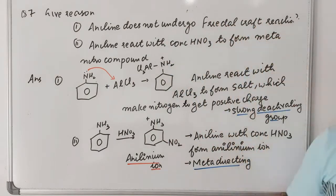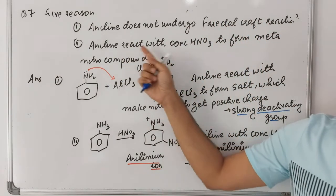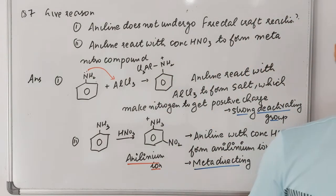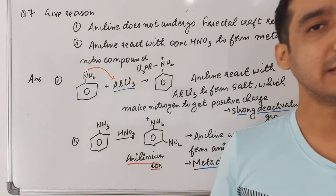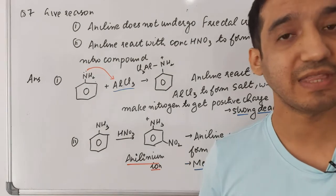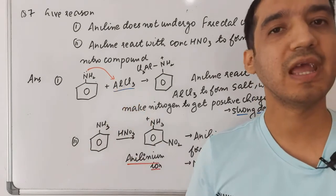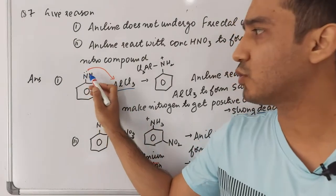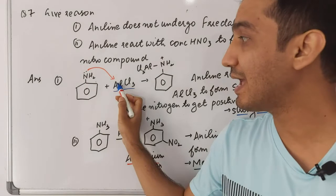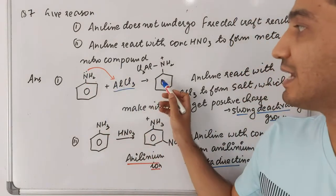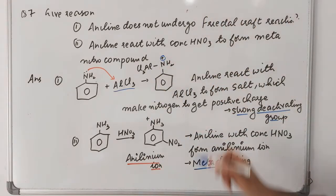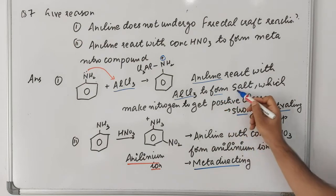Question seven: why does aniline not undergo the Friedel-Crafts reaction? In Friedel-Crafts reaction, AlCl₃ is used as a catalyst. AlCl₃ is a Lewis acid with electron deficiency. The NH₂ group has a lone pair, so Al forms a bond with NH₂, resulting in a nitrogen getting a positive charge. Aniline reacts with AlCl₃ to form a salt.